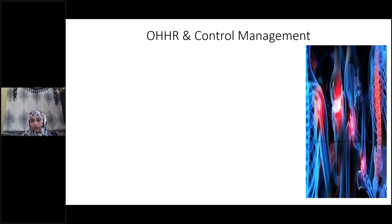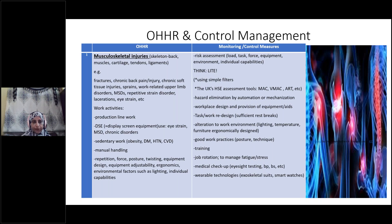Now we'll go to occupational health hazards and risks. The first topic I will concentrate on is musculoskeletal injuries, which relate to the musculoskeletal system I mentioned before. What health issues can affect this system? Strain, tendinitis, sprain, and fractures can occur. Common conditions nowadays include chronic back pain, arthritis, chronic soft tissue injuries and sprains, and repetitive strain disorder from doing repetitive work tasks.